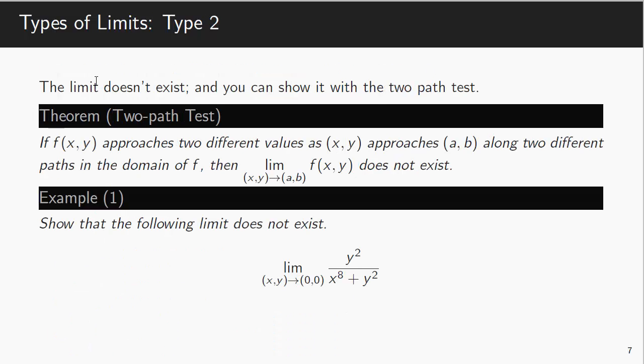The second thing that can happen is the limit doesn't exist. And if this is the case, you often will show that it doesn't exist using the two-path test. So this is a theorem in analysis. If f(x,y) approaches two different values as (x,y) approaches (a,b) along two different paths in the domain of f, then we say that the limit does not exist, or it actually implies that the limit does not exist.